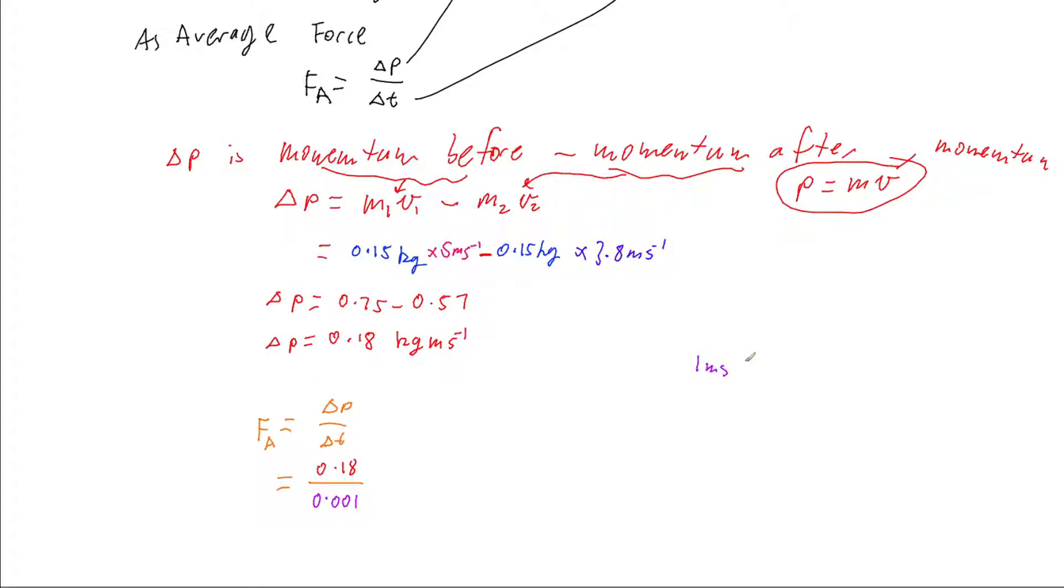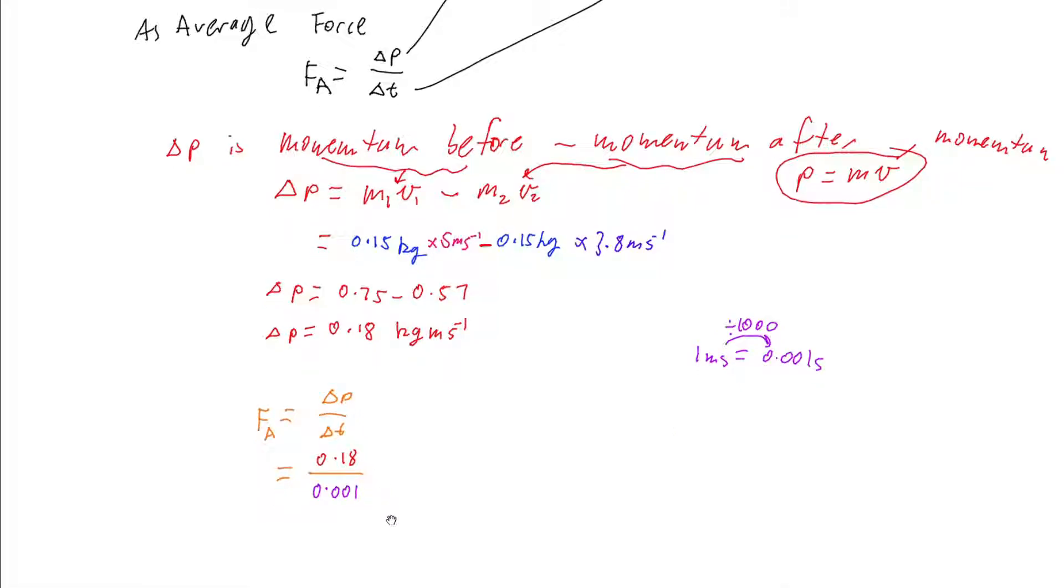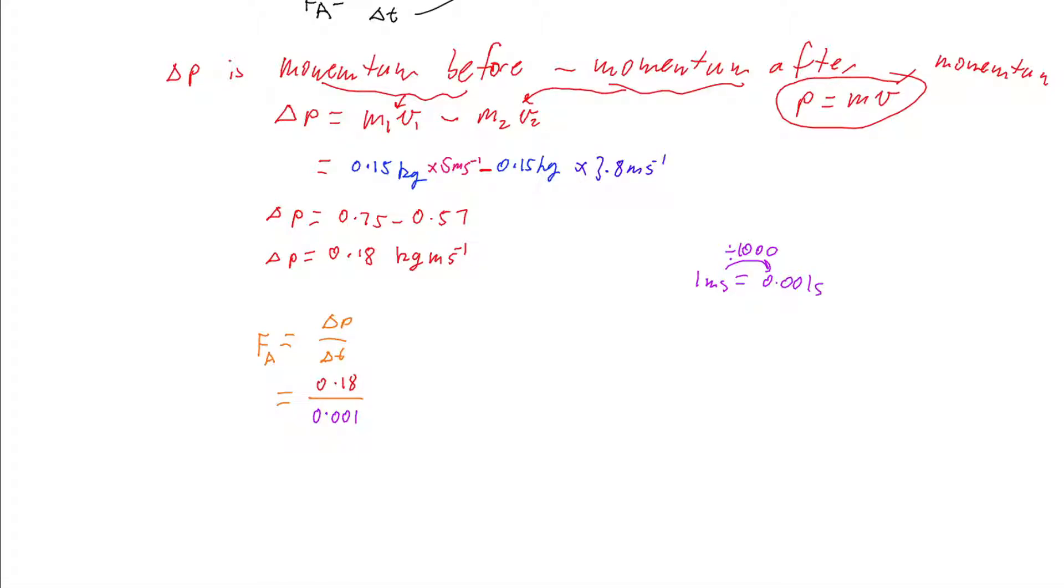Because we're going to have one millisecond equals, well, we've got to divide by a thousand to get to 0.001 seconds. So then all we have to do is work this out. So if we then go and divide this by 0.001, we're then going to get an average force of 180 newtons.